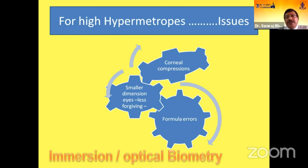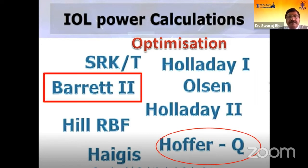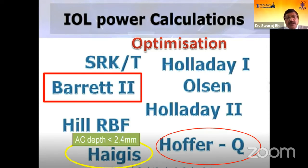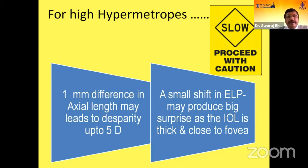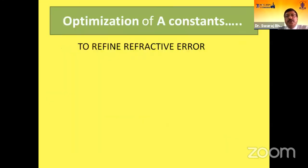For high hypermetropes, use immersion and optical biometry. For IOL power calculation, optimization is very important — go for Hofer-Q formula. Barrett Universal II is coming up as the choice of the day. Haigis formula is used when AC depth is less than 2.4 mm. Remember, one millimeter difference in axial length may lead to a disparity of up to 5 diopters, and a small shift in ELP may produce a big surprise as the IOL is thick and close to the fovea. For post-vitrectomy cases, particularly silicon-filled eyes, use ultrasonic biometry in the sitting posture and optical biometry in the silicone mode.